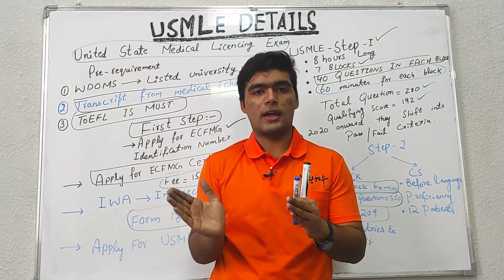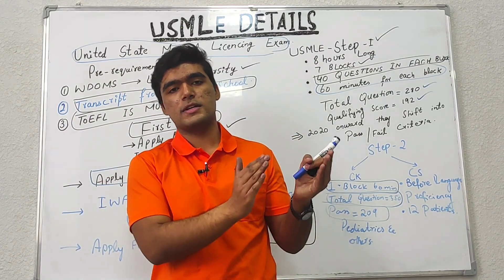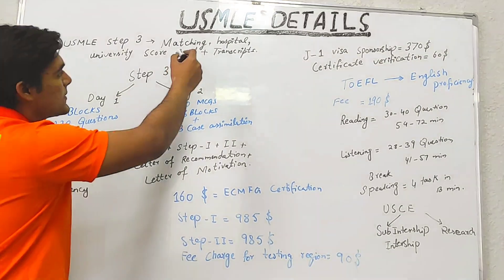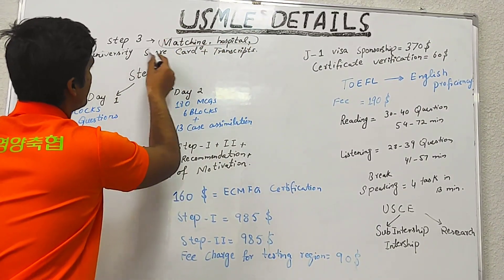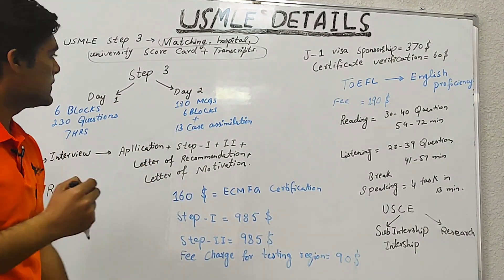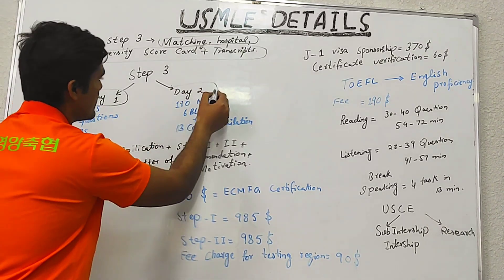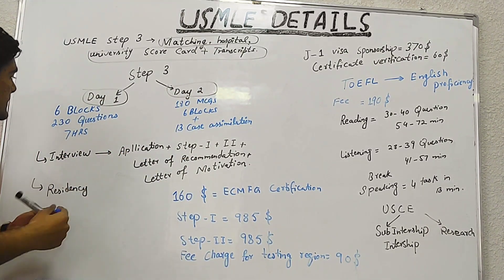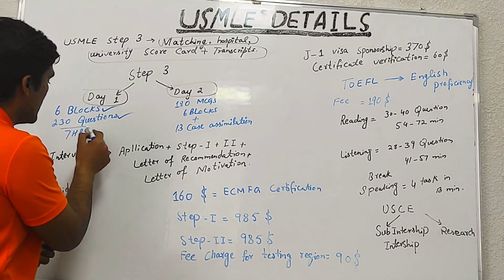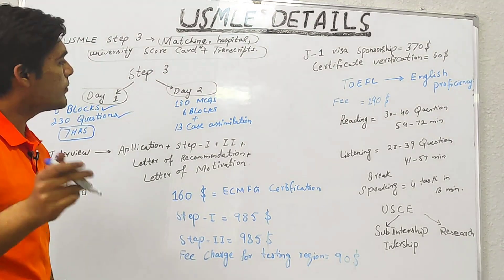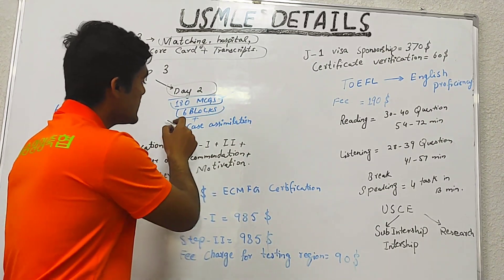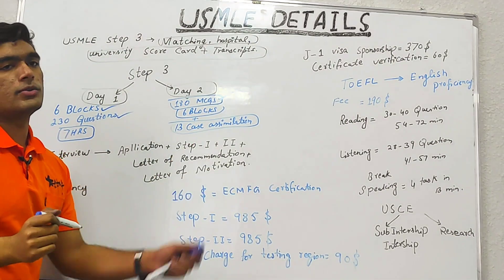In CS, you appear before a proficiency language test. You are given 12 patients to examine and assess their conditions. In Step 3, which involves matching of hospital and university scorecards and transcripts, there are two sub-steps. On Day 1, there is a test comprising 6 blocks each with 30 questions and a total time of 7 hours. On Day 2, there are 180 MCQs divided into 6 blocks, plus 13 case simulations.